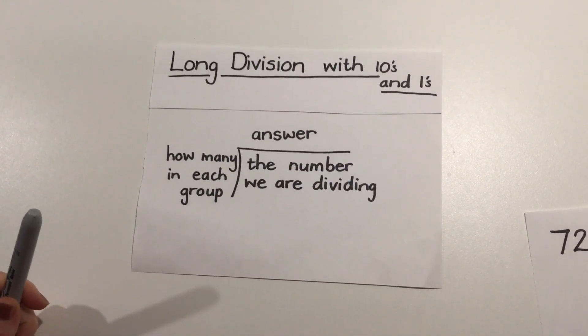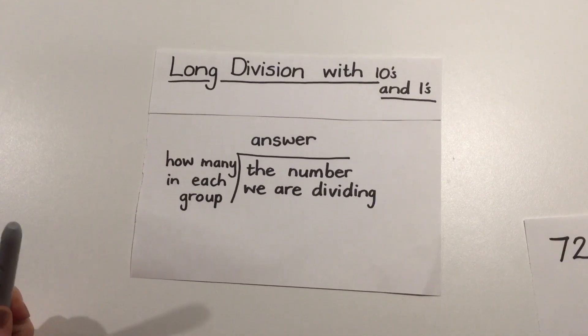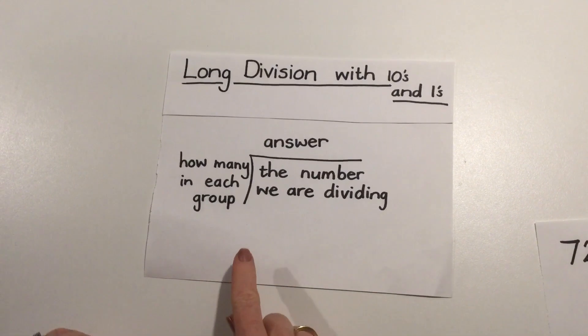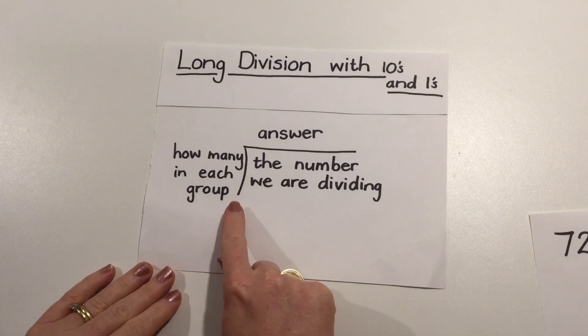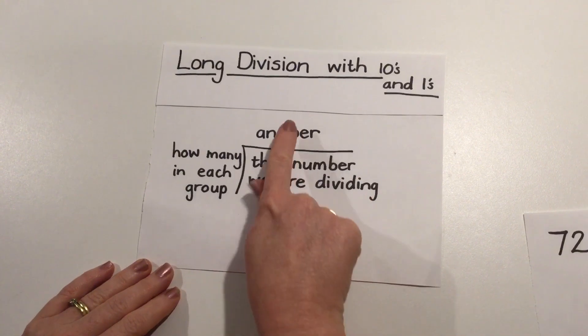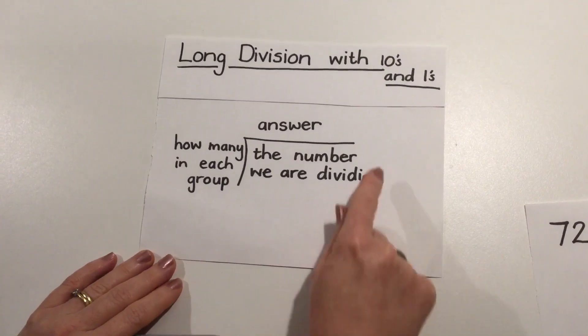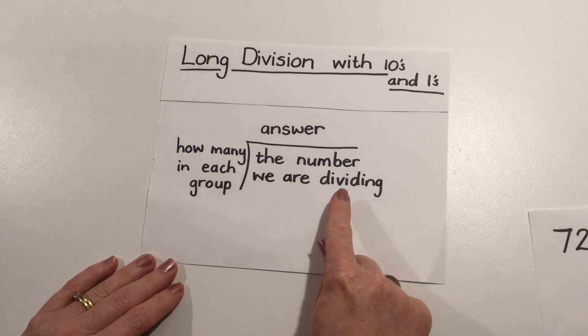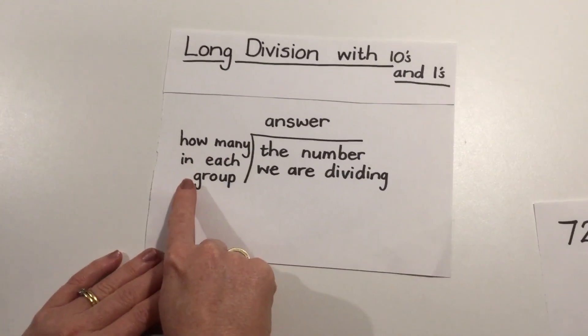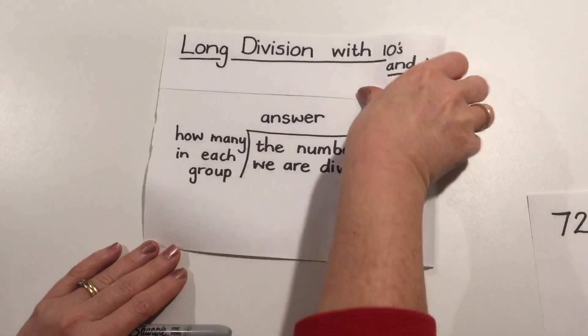So today we're going to look at long division with both tens and ones. Just a quick reminder: when we use the division sign as the bus stop, we have the answer that goes on the roof, the number that we are dividing up into groups on the inside, and how many in each group goes on the outside.